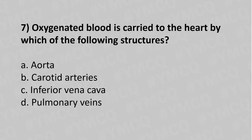Now let's move to question number seven: Oxygenated blood is carried to the heart by which of the following vessels? Option A: aorta. Option B: carotid artery. Option C: inferior vena cava. Option D: pulmonary veins. The answer is Option D: pulmonary veins.